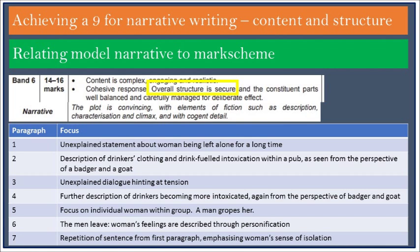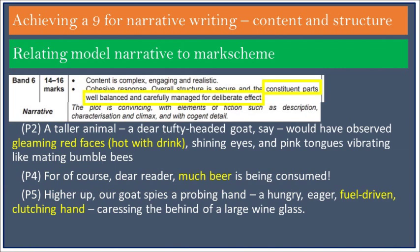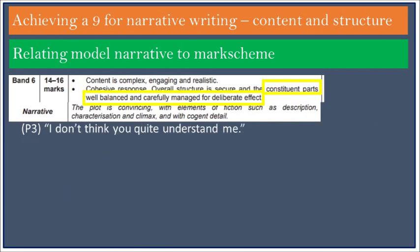The overall structure is secure. Within the seven paragraphs, each has a different sharp focus — whether it be describing the drinkers' clothing and drink-fuelled intoxication in paragraph 2, or the despondent feelings of the woman in paragraph 6. The constituent parts need to be well balanced and carefully managed for a deliberate effect. Note how paragraphs 2 and 4, describing increasing drunkenness, build up to the sexual assault in paragraph 5. Note also how paragraph 3 is deliberately far removed from the pub to unsettle and foreshadow the darker mood of the final two paragraphs.